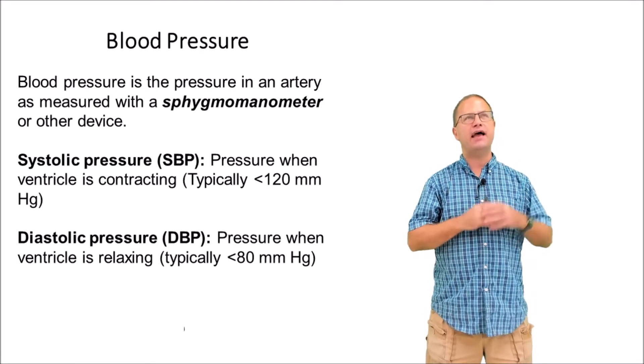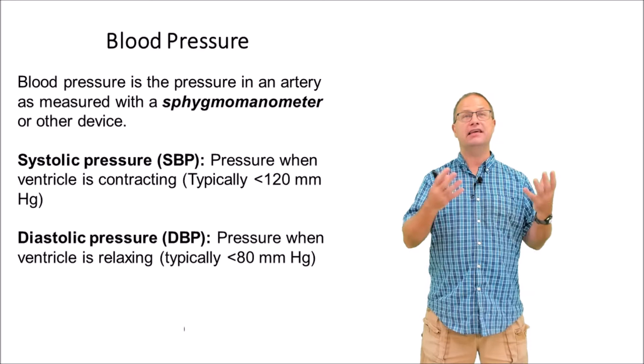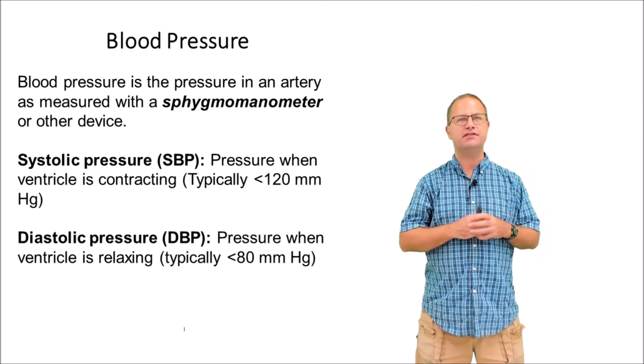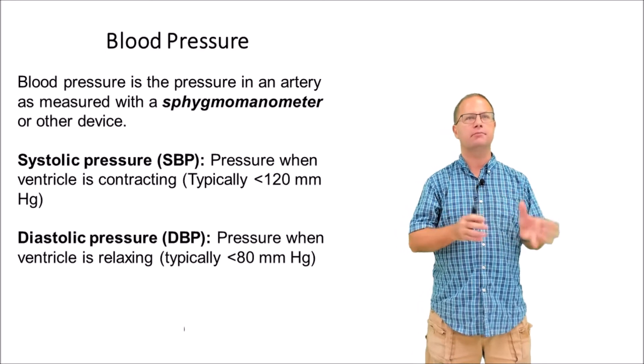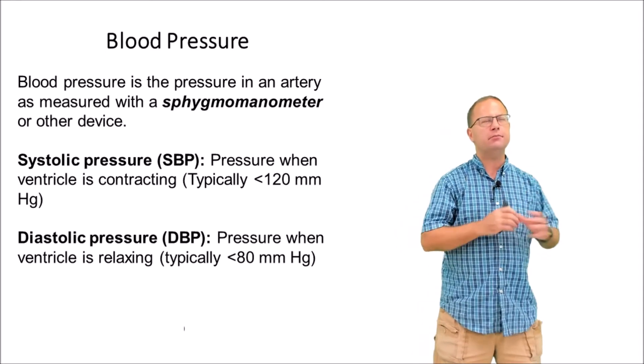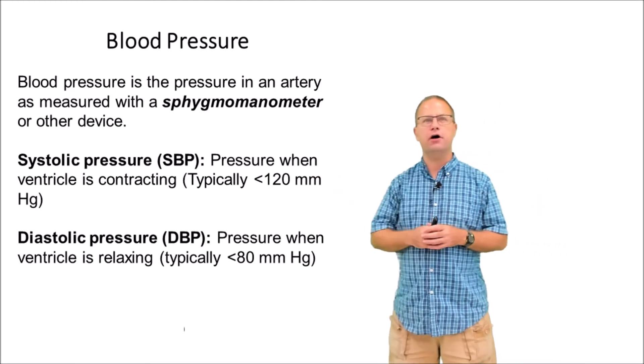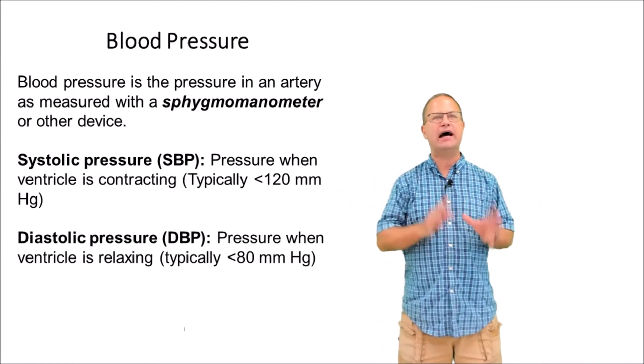A sphygmomanometer is a fancy word for a blood pressure cuff. There are other ways to estimate blood pressure using invasive measurements, but as far as we're concerned, the main tool we're going to use today is the sphygmomanometer or blood pressure cuff. There are a few different pressures we need to talk about. The first of these are probably familiar to you and they're called the systolic blood pressure and the diastolic blood pressure.